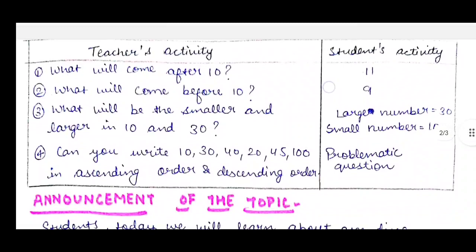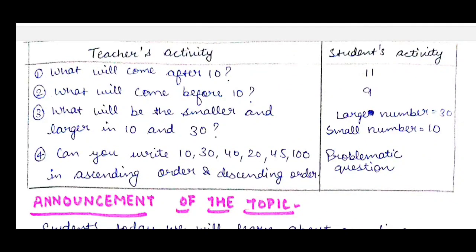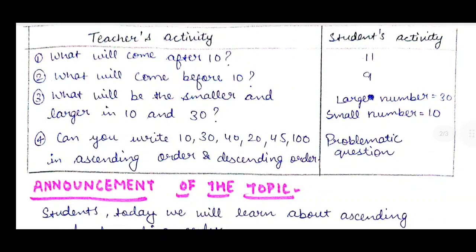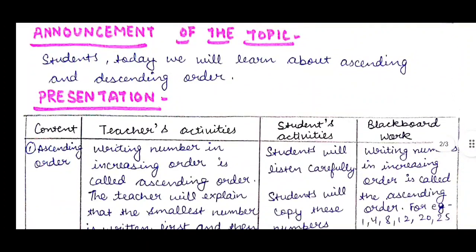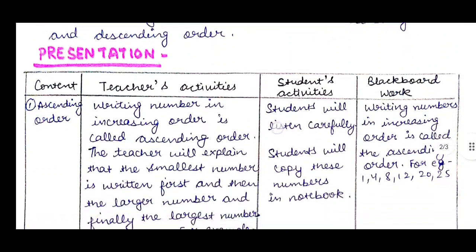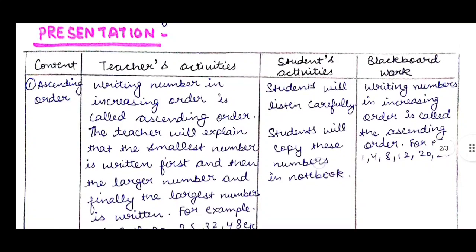The teacher will ask the following questions to the students. Here is teacher's activity and then student's activity. Teacher will ask: What will come after 10? Students will say 11. Then, what will come before 10? They will say 9. What will be the smaller and larger in 10 and 30? They will say the large number is 30 and small number is 10. Now she will ask: Can you write 10, 30, 40, 20, 45, 100 in ascending and descending order? That's a problematic question because they have never studied this concept. So now we will announce the topic: Today we will learn about ascending and descending order, and explain the concept.